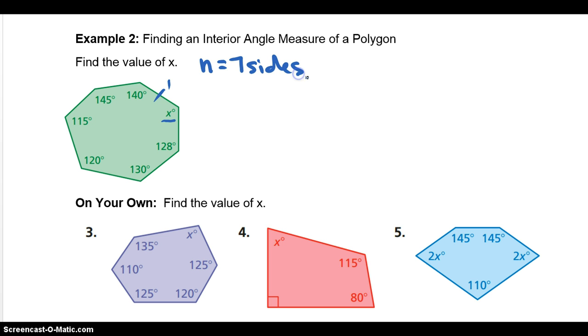So it's 7 sides. So the sum then, the sum of all the sides should equal 7 minus 2 times 180. Okay, so if you go ahead and figure that out, you would get s equals, the sum of all the sides is 900.